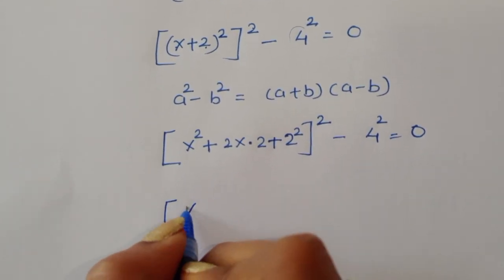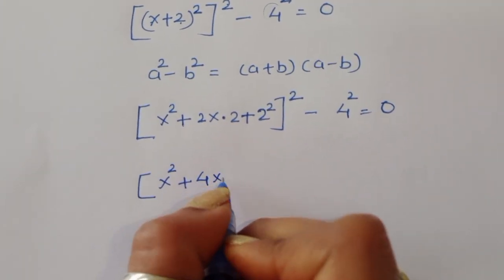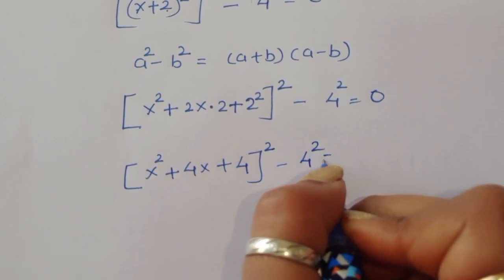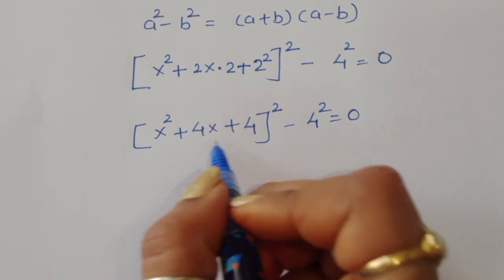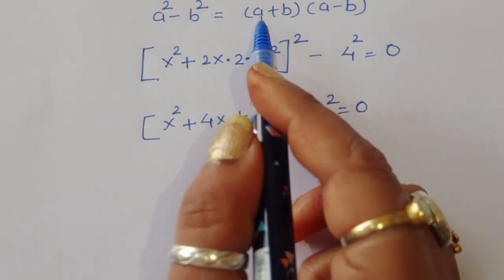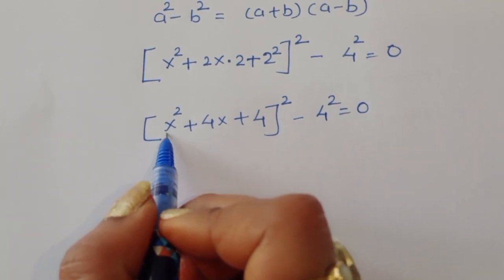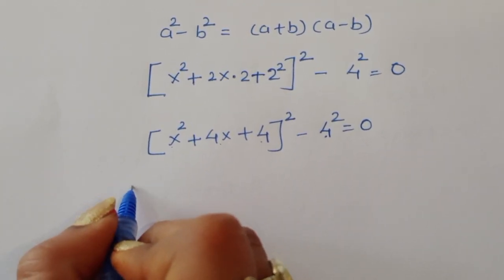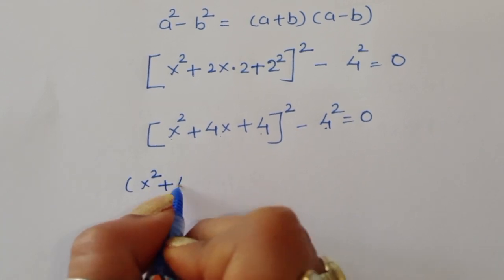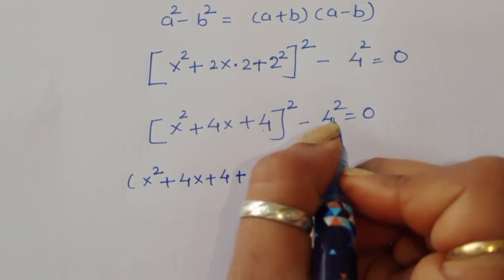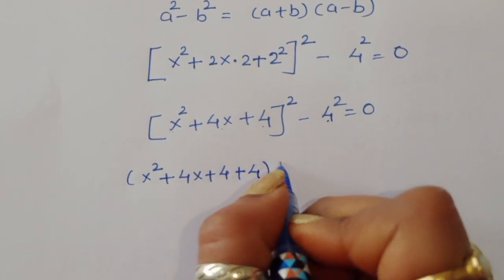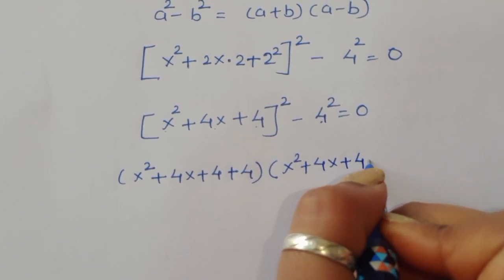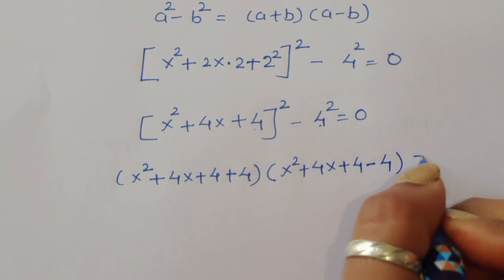So substituting back, a is (x² + 4x + 4) and b is 4. Applying a² − b² = (a + b)(a − b), we get (x² + 4x + 4 + 4)(x² + 4x + 4 − 4) = 0.